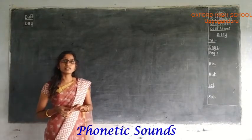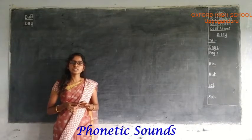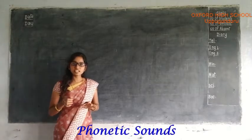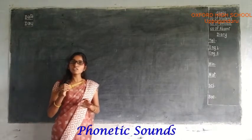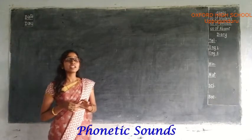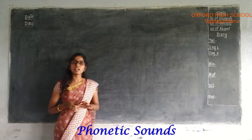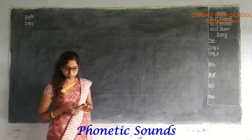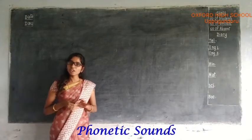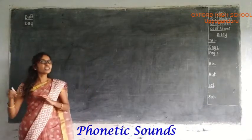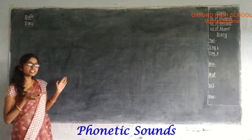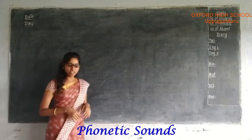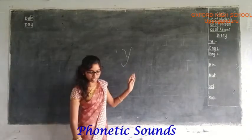Alphabets A to Z. These 26 letters have their own sounds. Each letter produces different types of sounds. Let's learn how to pronounce the alphabets.